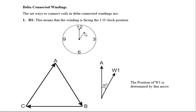D1 means one o'clock, and that means the windings are connected 30 degrees away — they are 30 degrees apart. This is your diagram of a Delta connection; this is how Delta is. Your A, your B, and your C are moving in a clockwise direction: this is A in this direction, this is B in this direction, and this is C.